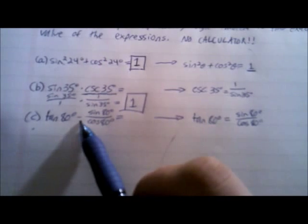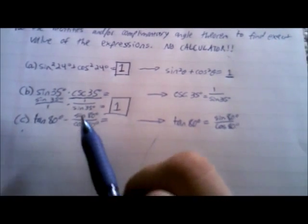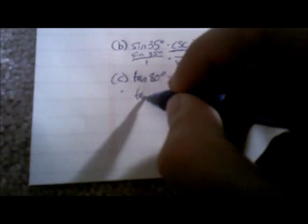Next one, tangent of 80 degrees minus sine of 80 degrees over cosine of 80 degrees. All the angles are the same. Using the quotient identity, tangent of 80 degrees equals sine of 80 over cosine of 80, so we rewrite this as tangent of 80 degrees minus tangent of 80 degrees. Those are the same — that's 0.